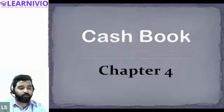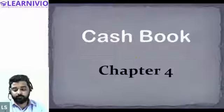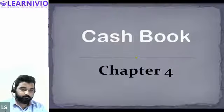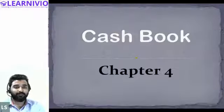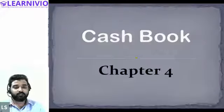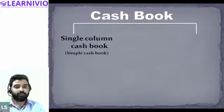In the cash book, we record transactions related to cash — cash inflow and outflow. There are two types of cash books: the simple cash book and the double column cash book. There is no triple column; petty cash book is different and we are not discussing it right now.